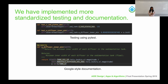We have implemented more standardized testing and documentation. For testing we use PyTest, and for documentation we use the Google Style Guide. We use PyTest so that if people make changes to the code in the future, we can ensure functions are still doing exactly what they're supposed to do. We use the Google Style Guide because through Sphinx, we can automatically create a website containing this documentation for easy access. This standardization allows future teams to understand the code and allows users to easily see what the functions are supposed to be calculating.